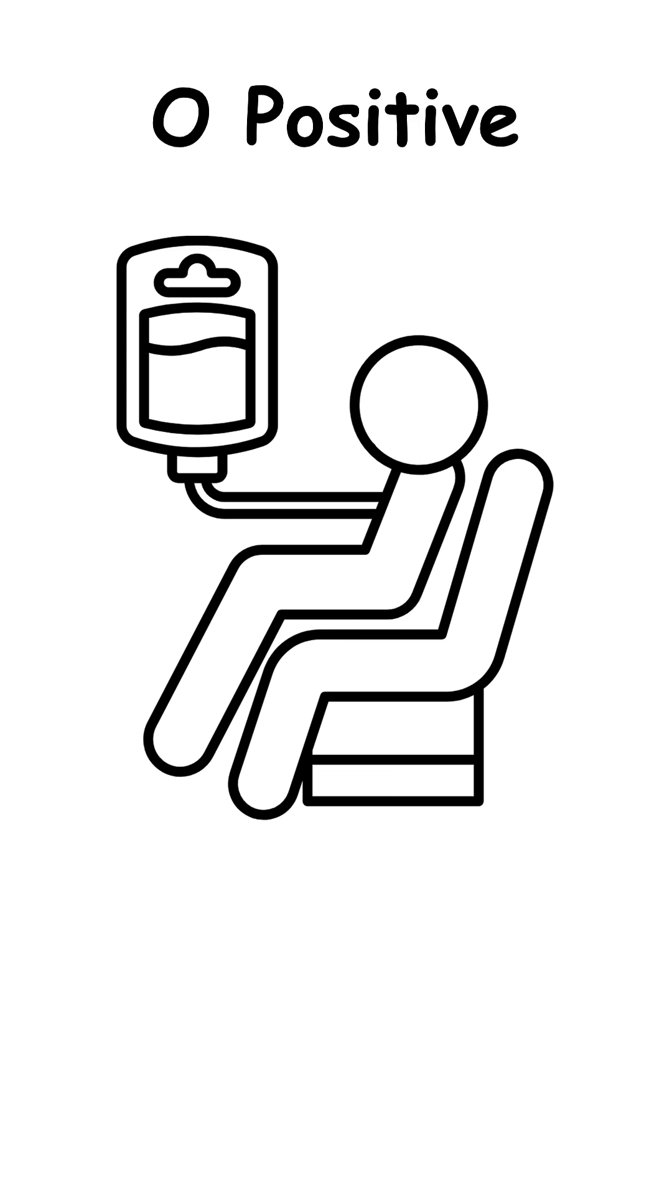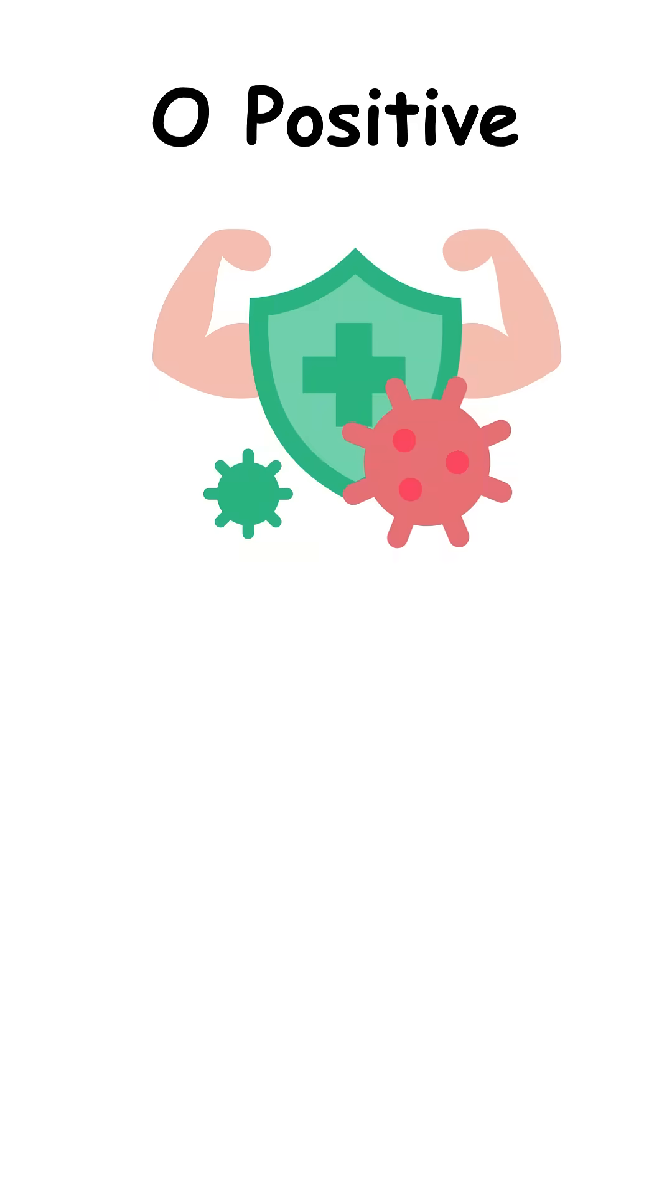But when it comes to receiving blood, you're surprisingly high maintenance. You only accept from O plus or O minus donors because your immune system will straight up reject anything with A or B markers.